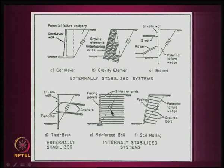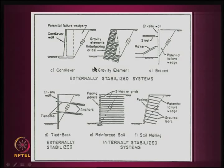The most classical case is soil nailing. You have a failure surface and put a series of nails so that earth pressure does not develop. The moment earth pressure is not developed, you do not need a heavy retaining system — simply add some sort of facing and it is fine. So these three (retaining walls, braced excavations, tie-backs) are externally stabilized systems, and soil nailing and reinforced soil are internally stabilized systems.